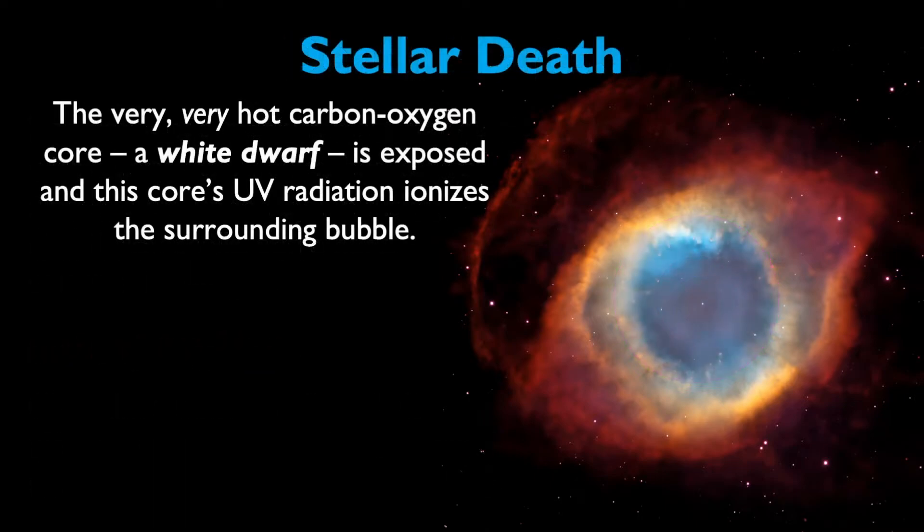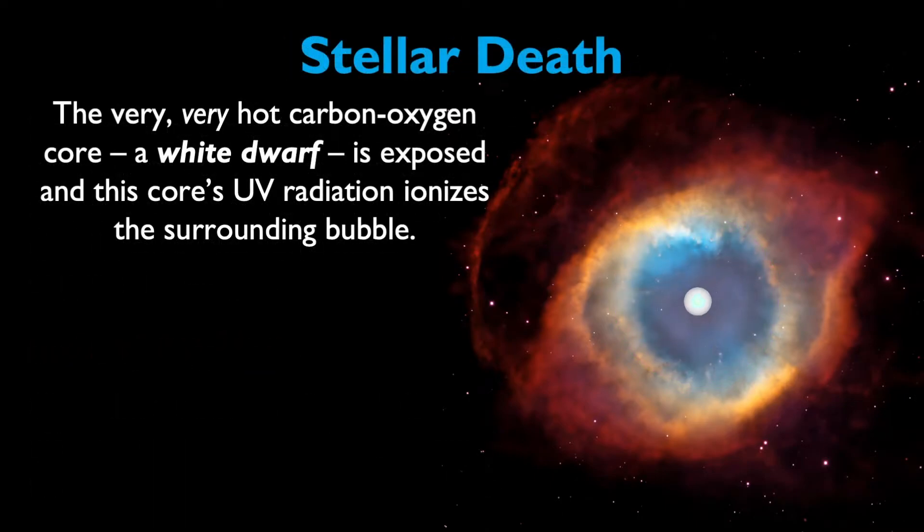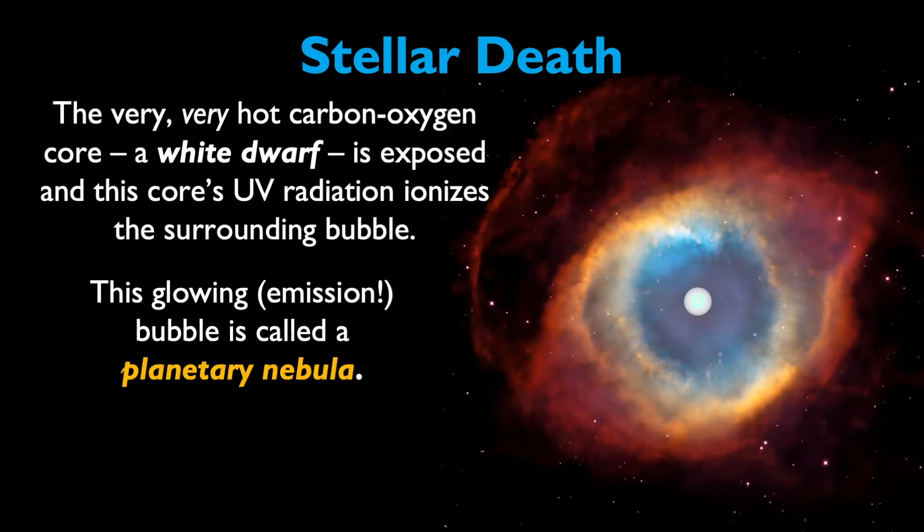As the gases expand away and are shed by the star, that very hot carbon-oxygen core, which is considered a white dwarf, is exposed. The core's UV radiation, corresponding to its high temperature, ionizes the surrounding bubble of expanding gas. This glowing emission bubble is called a planetary nebula.